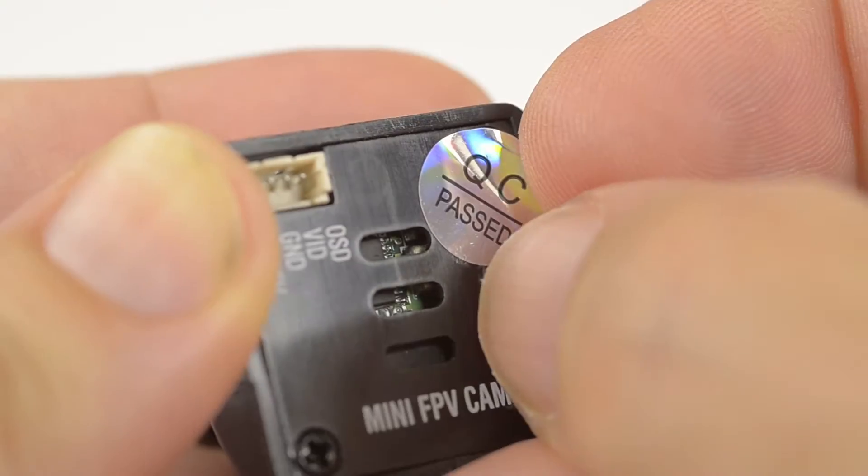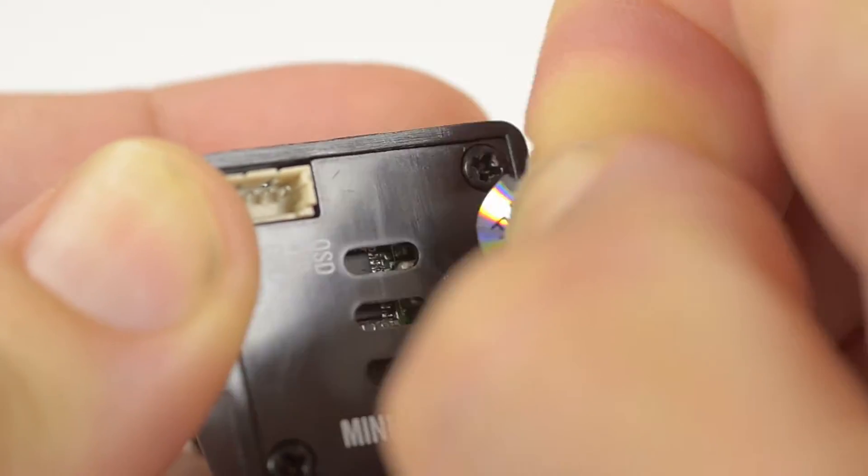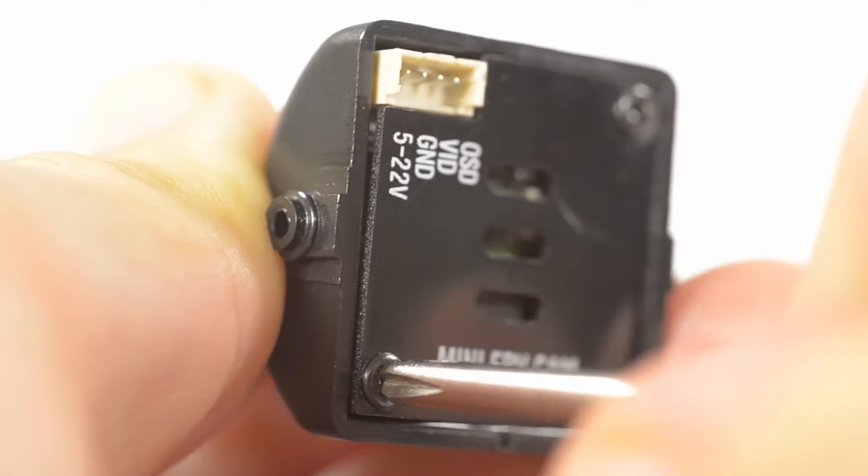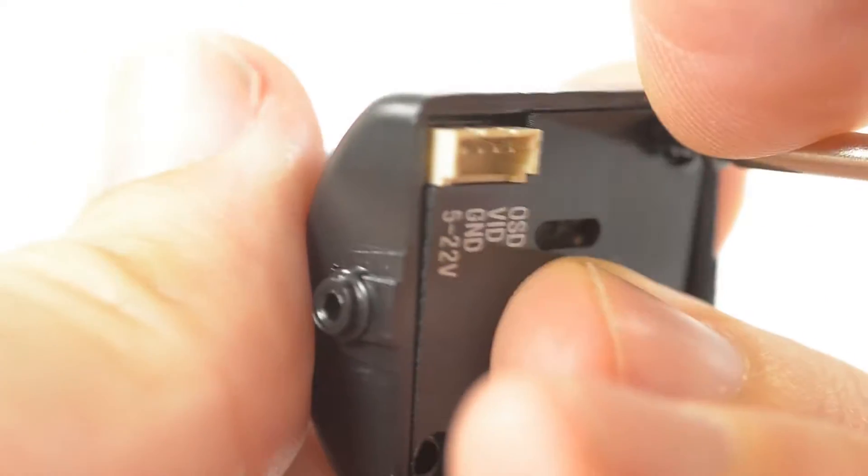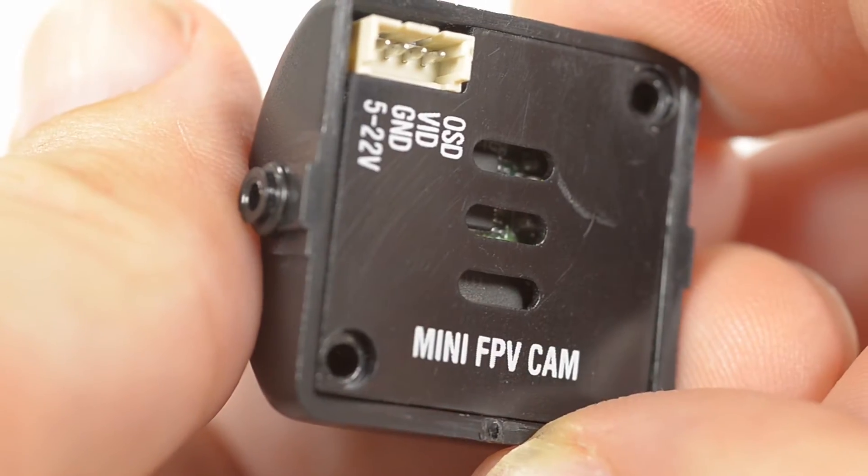Take the camera. First remove anything covering the screws. Carefully remove the rear screws and leave the camera assembled.